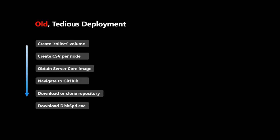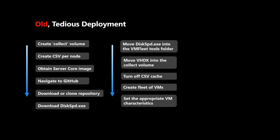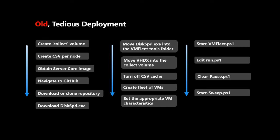In the past there were quite a few steps to deploy. First, you needed to create a collect volume, then a cluster shared volume per node, obtain a server core image, navigate to GitHub, download the repository and executable separately. In addition, you needed to move the executable into the right folder, move the VHDX into a selected folder, turn off the CSV cache, create a fleet of VMs using a script, and set appropriate VM characteristics like memory. And then there were multiple entry points — you could modify run.ps1 and run the clear-pause script, or start the start sweep script with parameters.